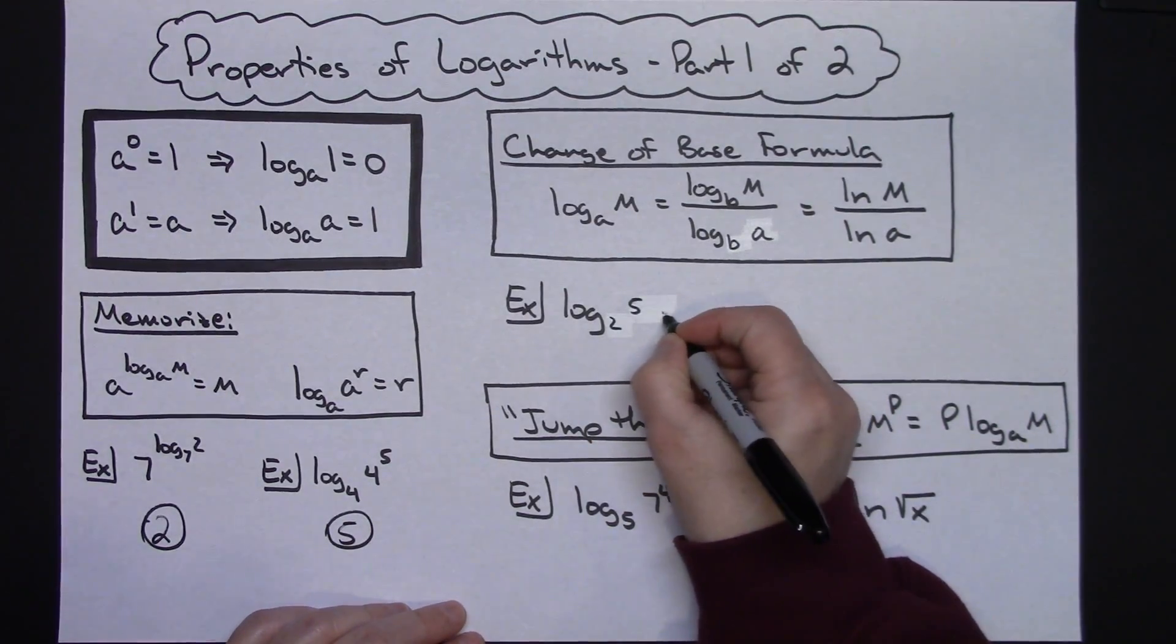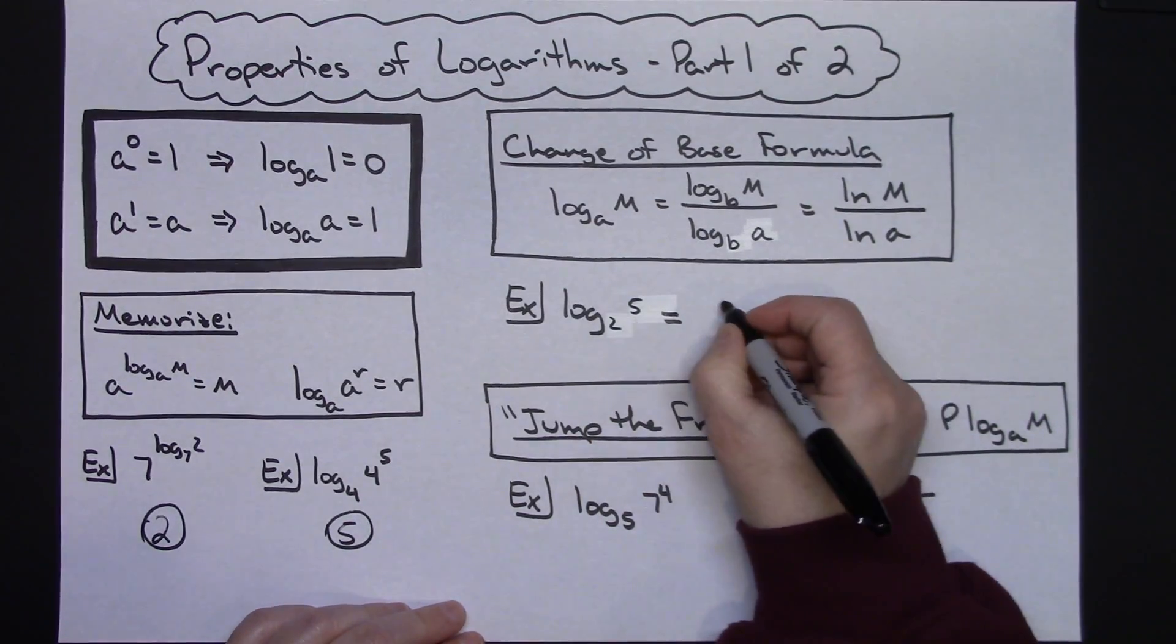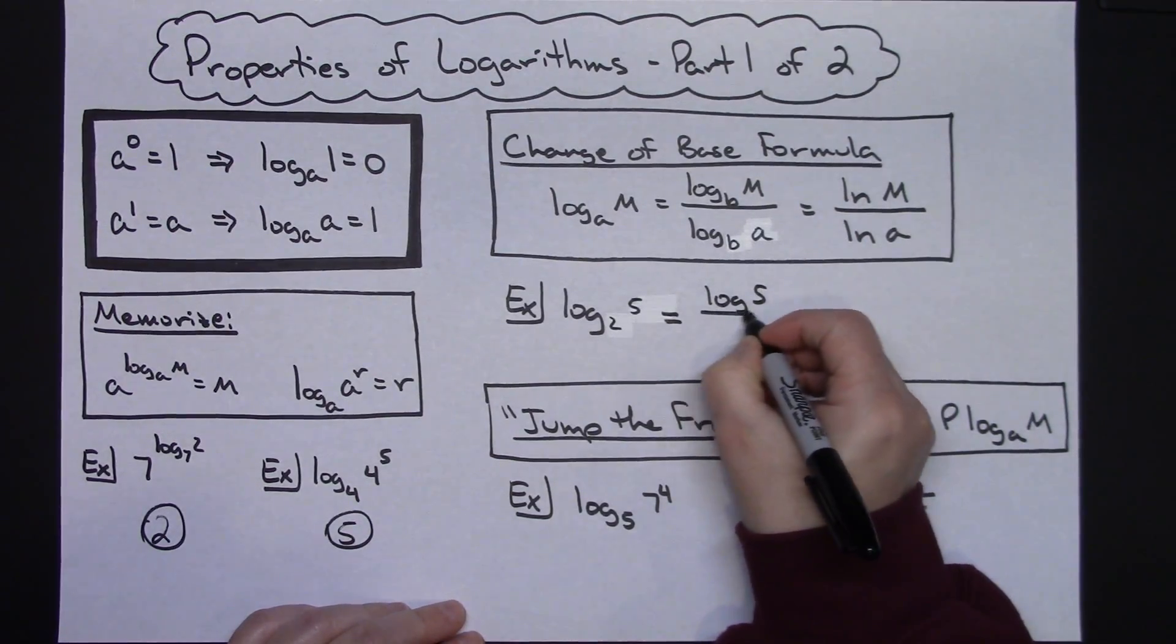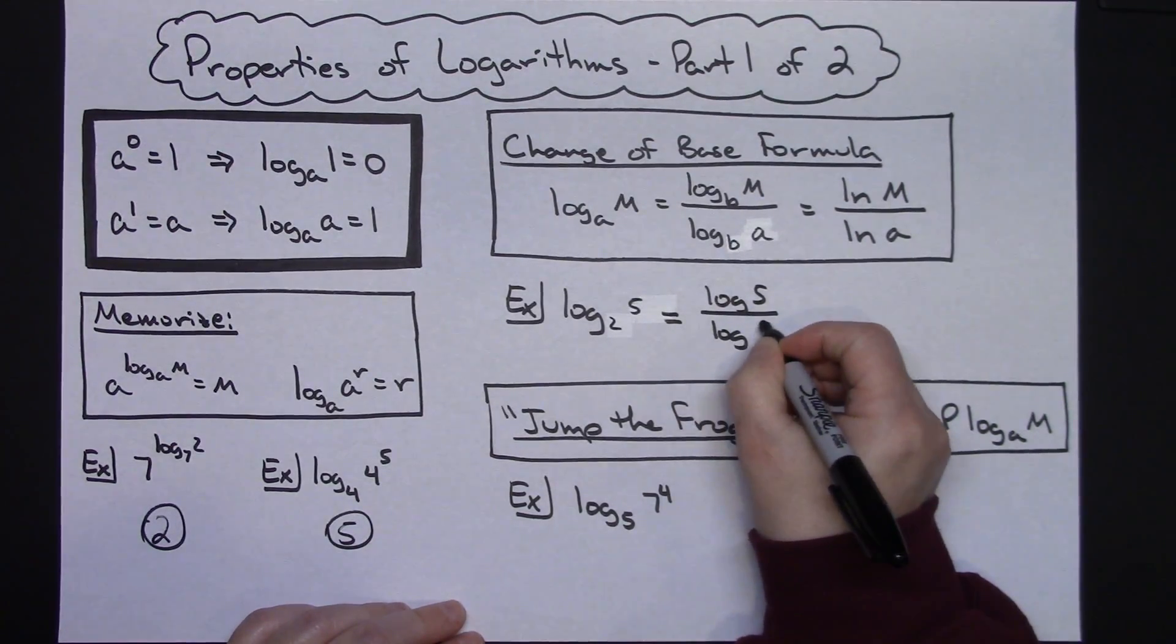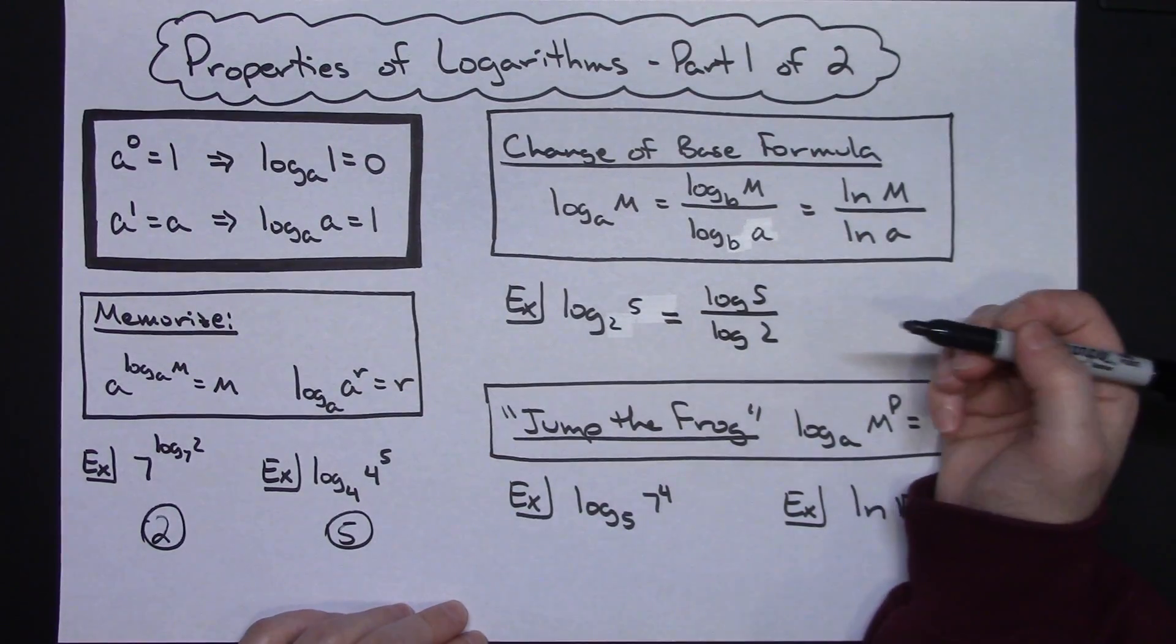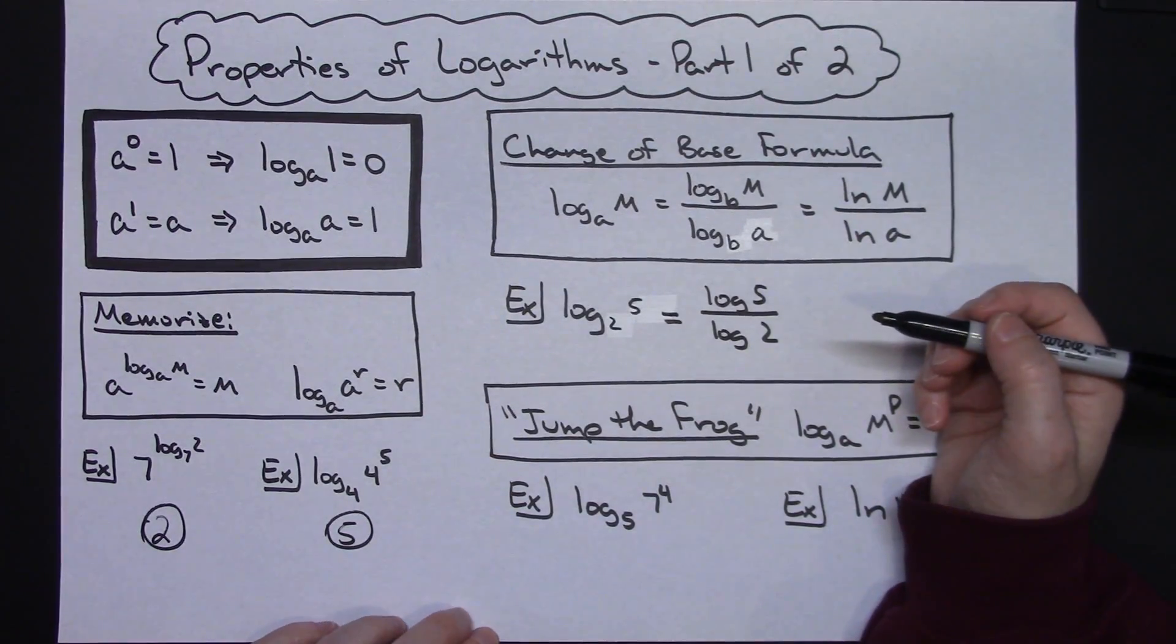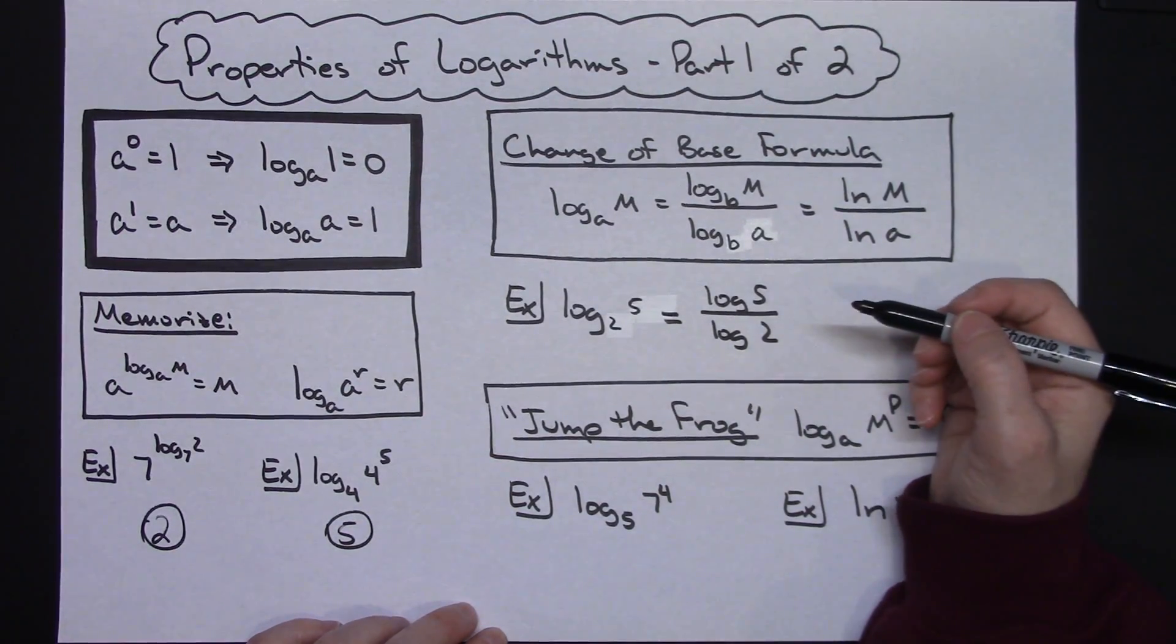So if I was trying to evaluate the log of five base two, and I had a calculator really handy, then I could do say the log of five divided by the log of two, both of those being the base of 10. And I could plug that into a calculator, get the decimal approximation.